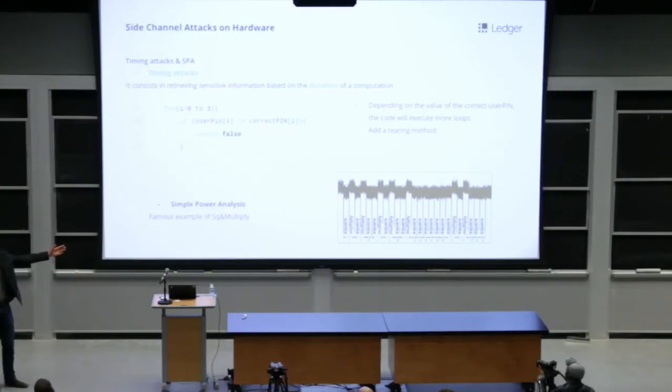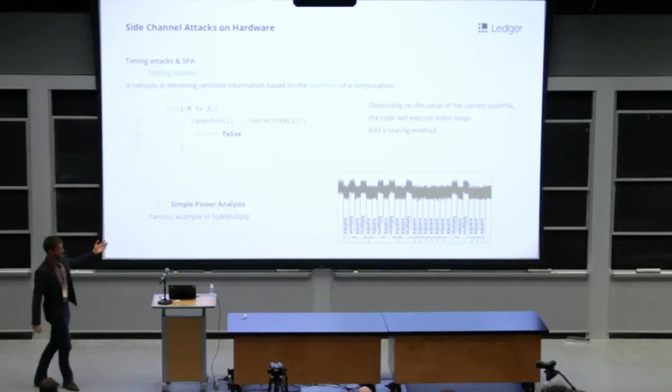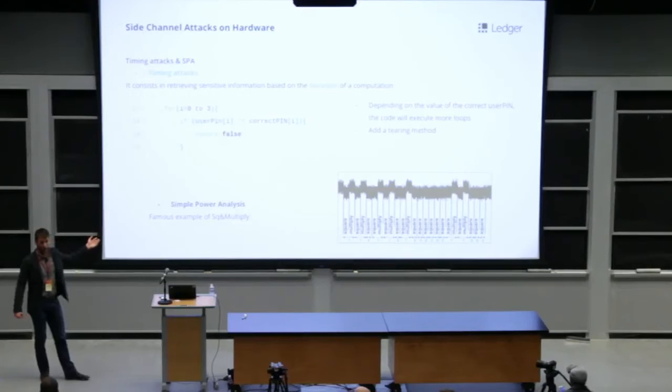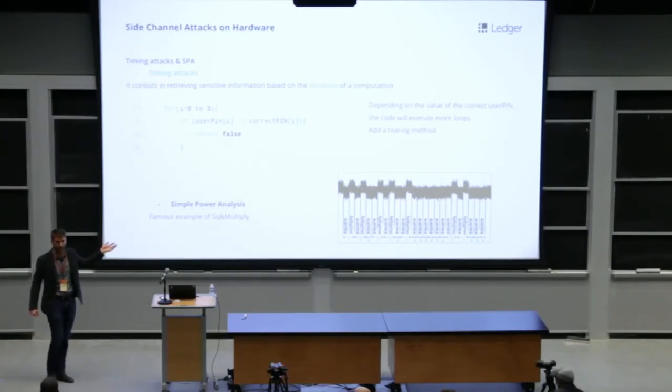This trace is the power consumption of an RSA execution. RSA, a fast implementation of RSA is the square and multiply. At each iteration, the algorithm executes a square. And then according to the value of the current bit of the exponent, the private exponent, it computes a multiply. If it's a one, it computes a multiply. If it's a zero, it doesn't. So that means the execution depends on the value of the key. And if it's possible to distinguish on the power trace, a square from a multiply, that means the attacker has only to read the value of the bits of the key directly on the power consumption. I talk about square and multiply for RSA, but in the case of ECDSA, this is double and add, and the algorithm is exactly the same.